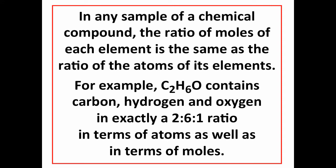So this is an important summary concept: in any sample of a chemical compound, the mole ratio of the elements is going to be the same as the atom or potentially ion ratio of the things that make it up. We just saw this with a one-to-one ratio for lead and sulfur. But if we have the molecular compound C2H6O, then that's going to contain carbon, hydrogen, and oxygen in exactly a two to six to one ratio, both in terms of atoms and in terms of moles.